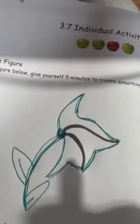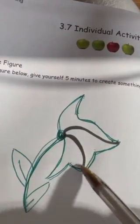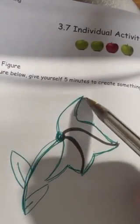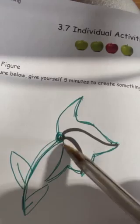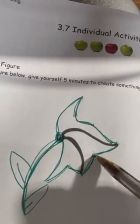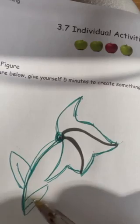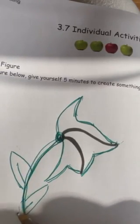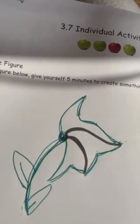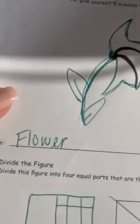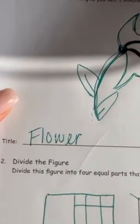So the original figure just had these two lines that you see here. And then I added the following lines to create a flower. The title of my figure is flower.